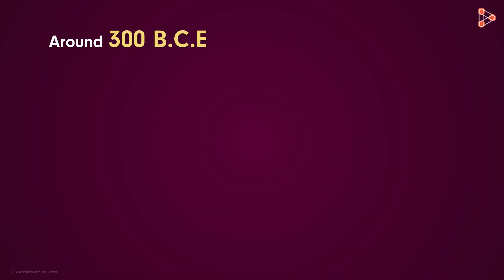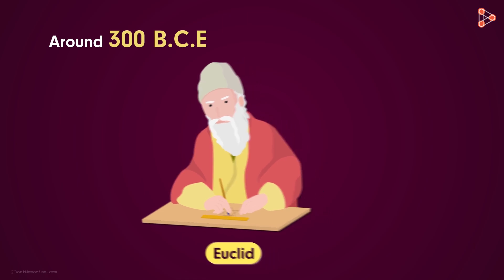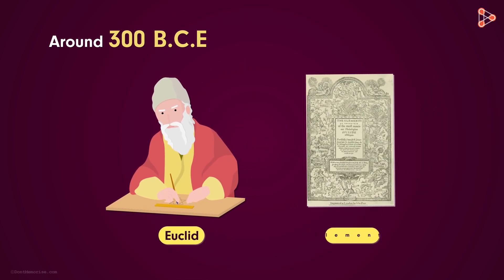Around 300 BCE, the Greek mathematician Euclid combined all the knowledge of geometry known at that time in a set of 13 books called Elements.